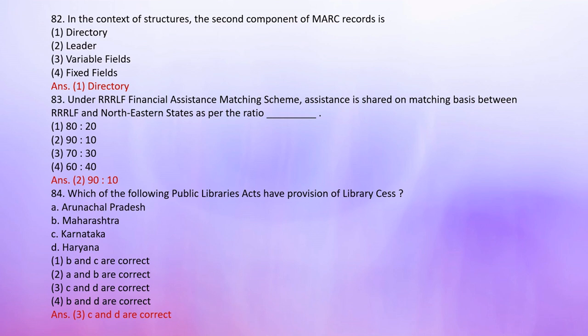Number 84: Which of the following public library acts have provision of library cess? A. Arunachal Pradesh, B. Maharashtra, C. Karnataka, D. [option D]. The correct answer is 3: C and D are correct.